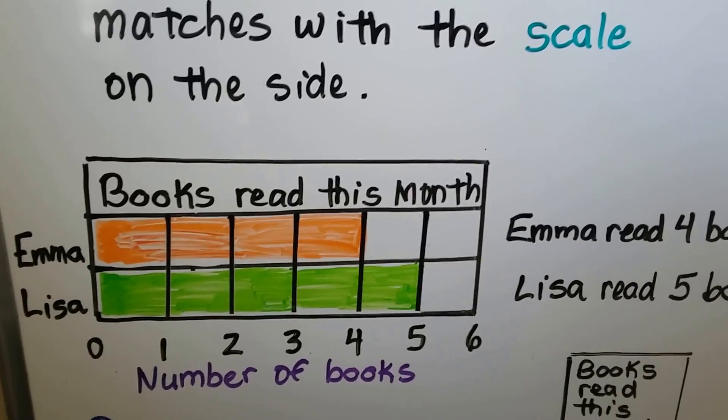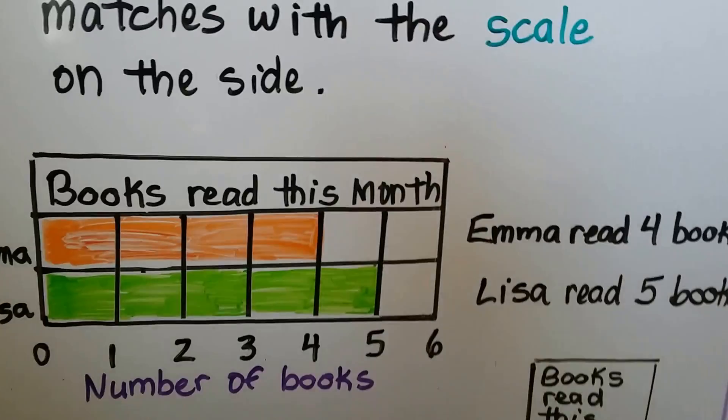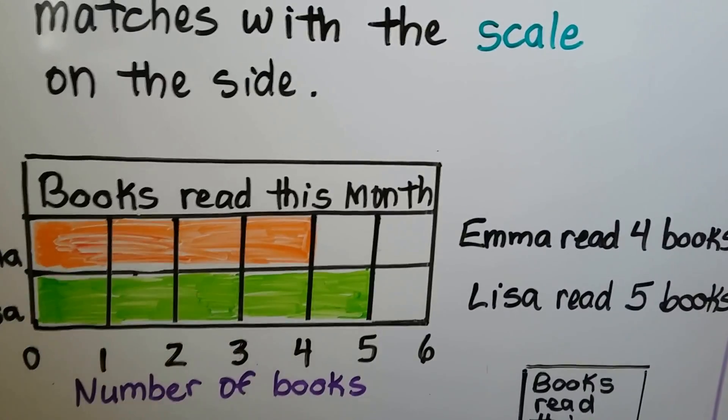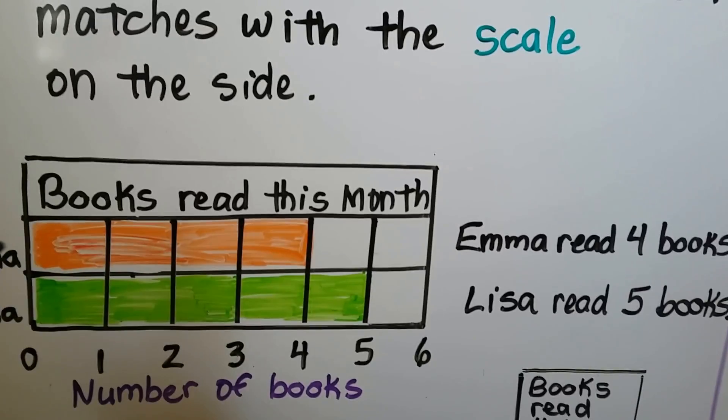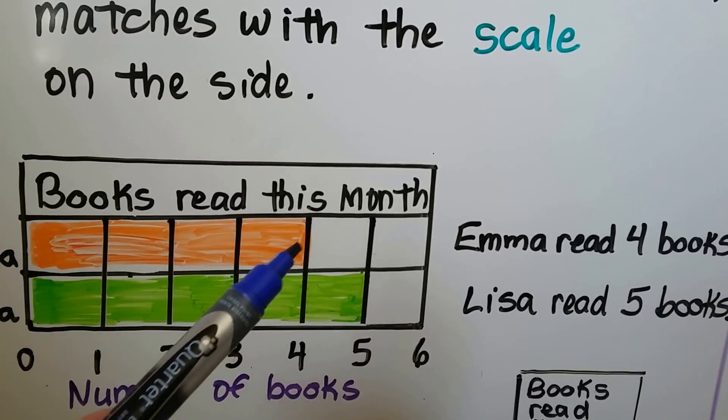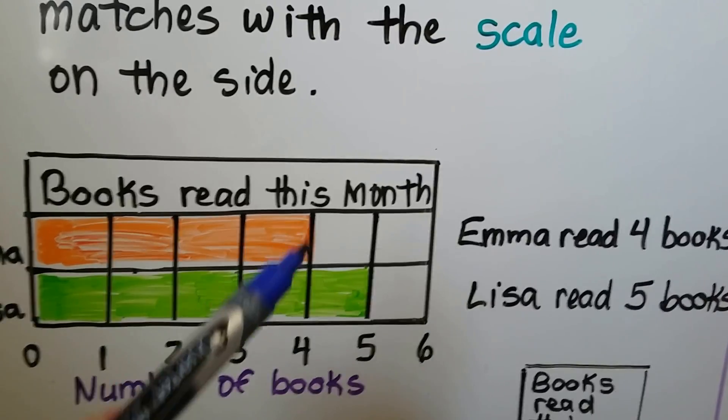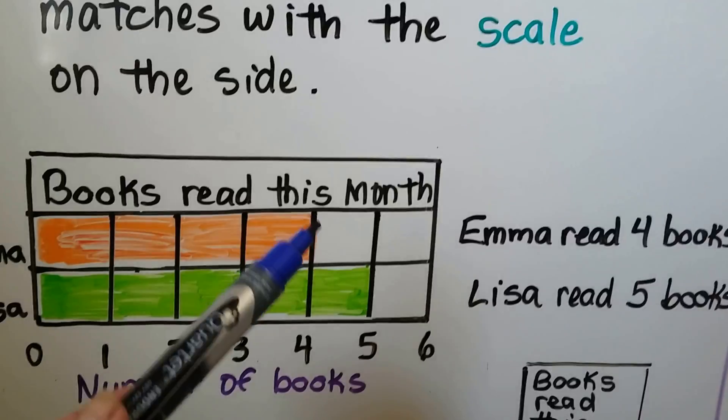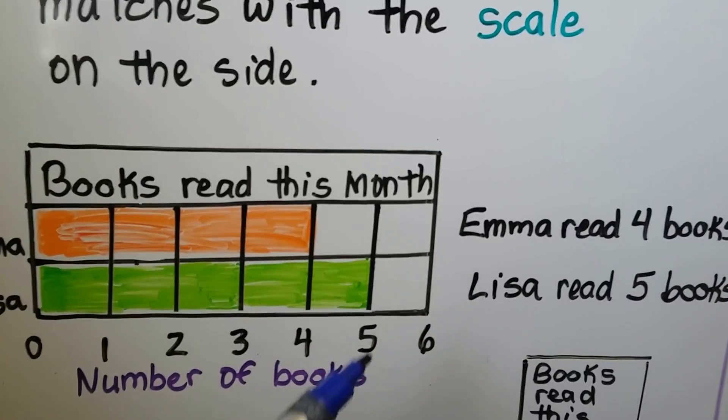Here we have a bar graph titled Books Read This Month. Emma read some books and Lisa read some books. We can find out how many they read by following the bar. We follow the bar for Emma and we move our finger down and see that is at the four. So Emma read four books.